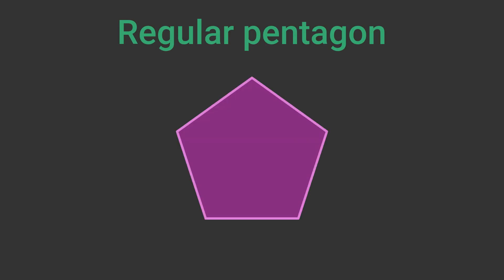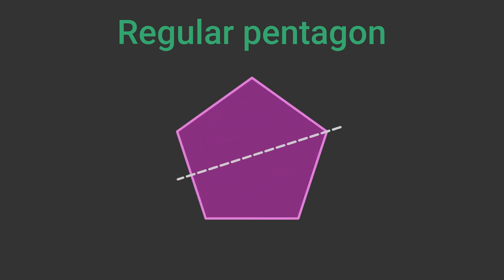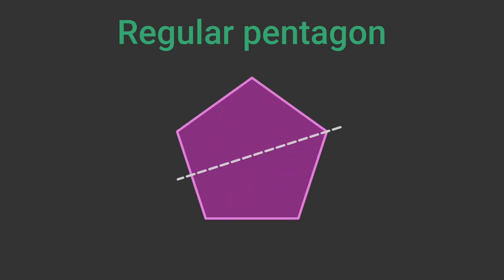A regular pentagon has a line of symmetry between any vertex and the middle of the opposite side. The same is true whichever vertex we choose. Since there are five vertices, there are five lines of symmetry.